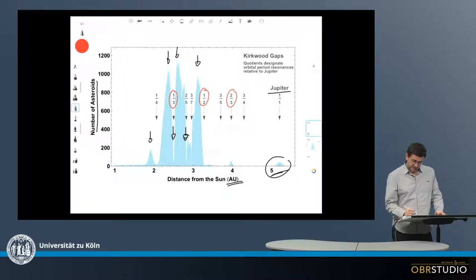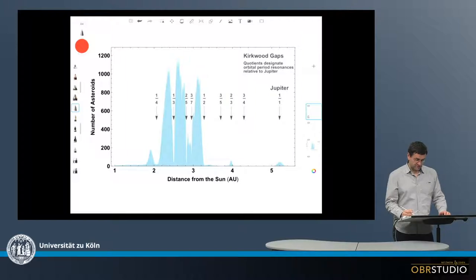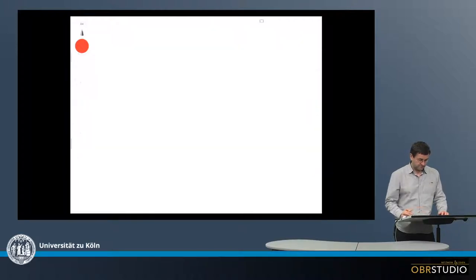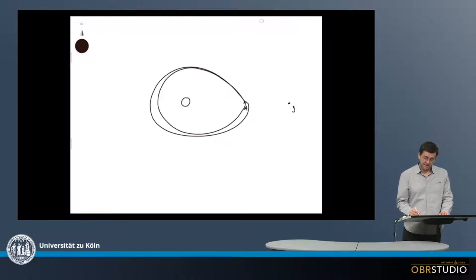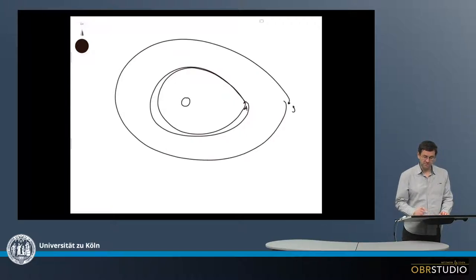This is something I'd like to illustrate here. If the Sun is in the center here, and then here is an asteroid and over here is Jupiter, the asteroid orbits the Sun twice and at the same time Jupiter orbits the Sun once, and then they meet at exactly the same point.